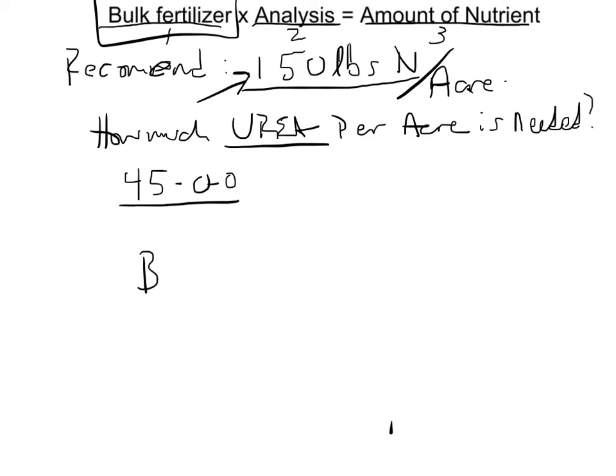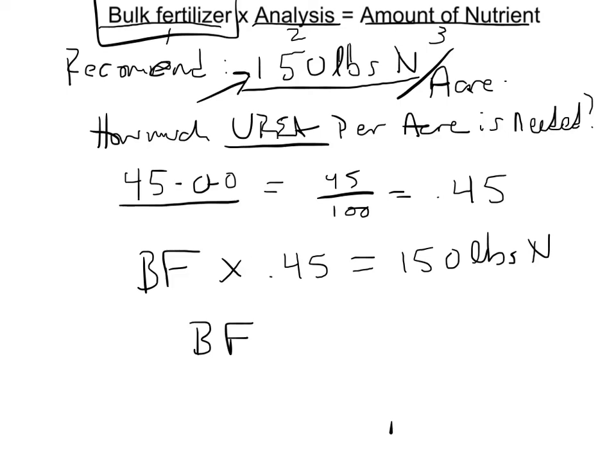So we have our bulk fertilizer, we don't know what that is. That's what we're going to solve for. Times the analysis, well, the analysis is 45 over 100, which is .45. So bulk fertilizer times the analysis, that's .45, is equal to, needs to be equal to 150 pounds of nitrogen. And we'll just assume that it's per one acre, so we don't have to put the acre on there. Well, that means that if we take this guy, bring it over here, and put him on the bottom, we have 150 divided by .45.